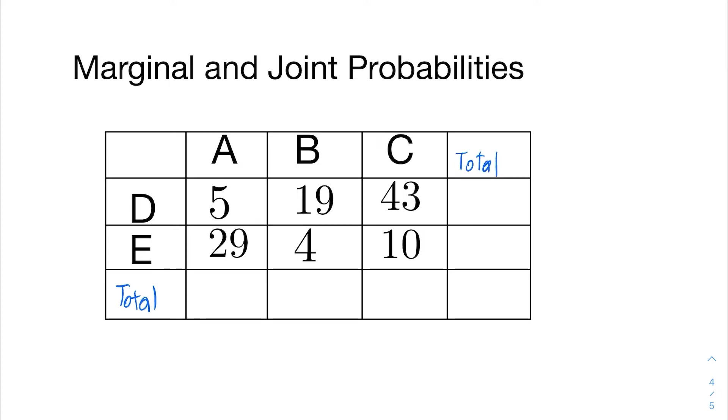So if I add the column of A, 5 plus 29, I'll get 34. Column B, 19 plus 4 is 23. And column C, 43 plus 10 is 53. Adding all of those up, I believe we get 110.